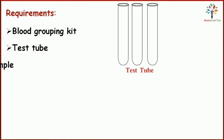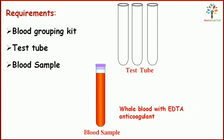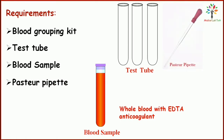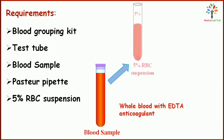We need a blood sample, which will be an EDTA blood sample. Next is a Pasteur pipette, which we will use to take the blood sample. We also need a 5% red cell suspension, which we will prepare from the blood sample. Finally, we need a centrifuge machine.